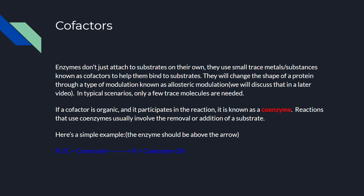Now on to cofactors. Enzymes don't attach to substrates on their own — they use small trace metals or substances known as cofactors to help them bind to substrates. Cofactors basically change the conformational shape of the active site so it's an easier fit to bind with the substrate, and they do this by a form of modulation known as allosteric modulation.